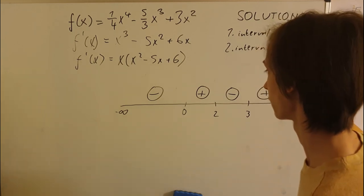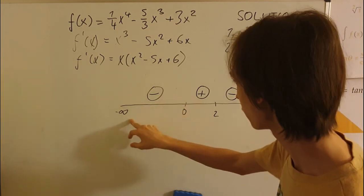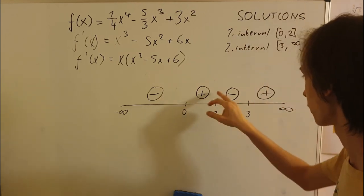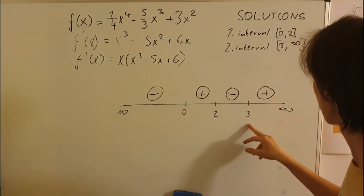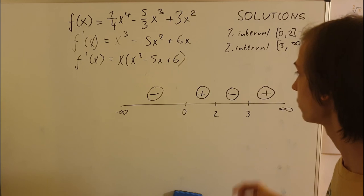And of course, the critical points, in other words, are boundaries for our intervals. And we had one interval minus infinity to zero which was negative, zero to two which was positive, two to three was negative, three to infinity was positive.